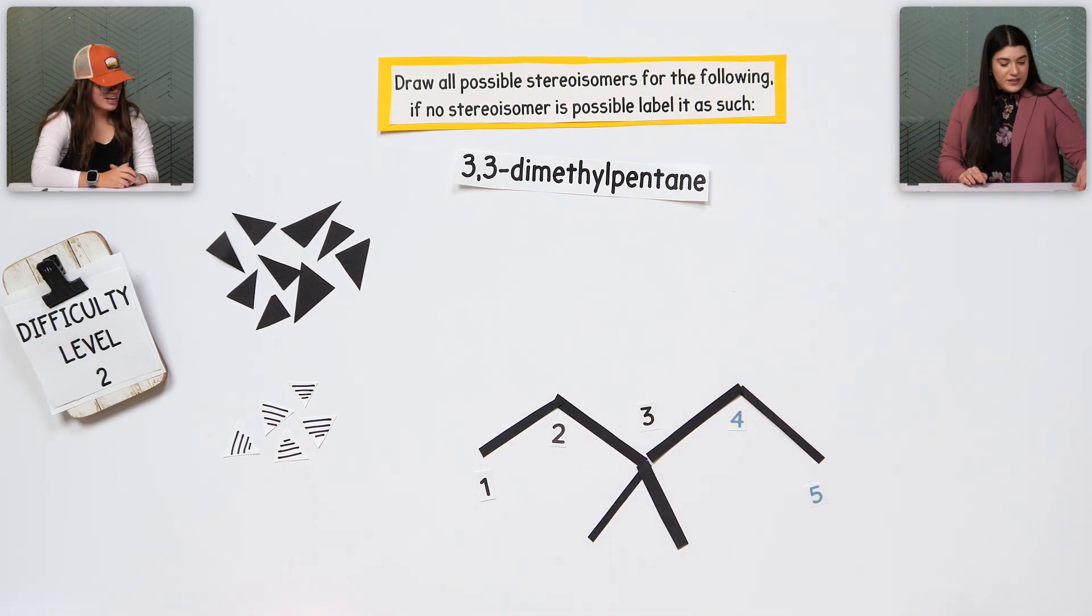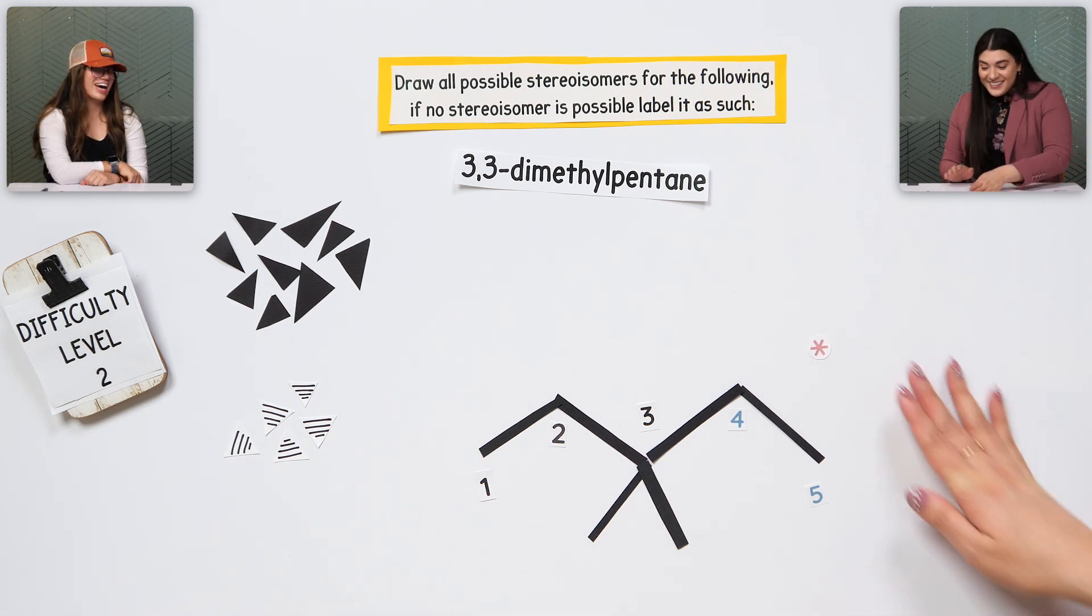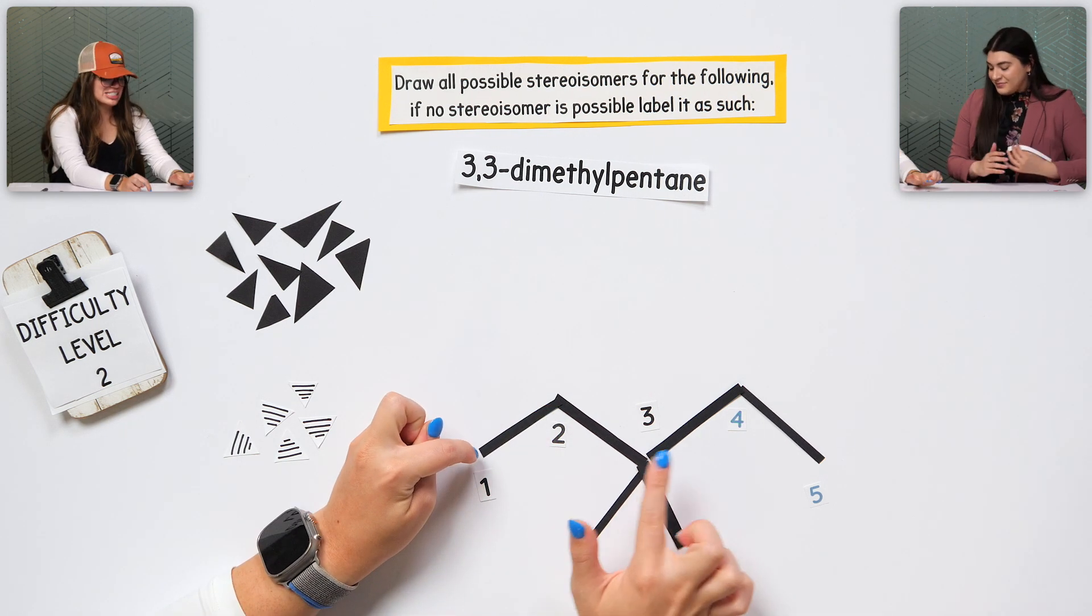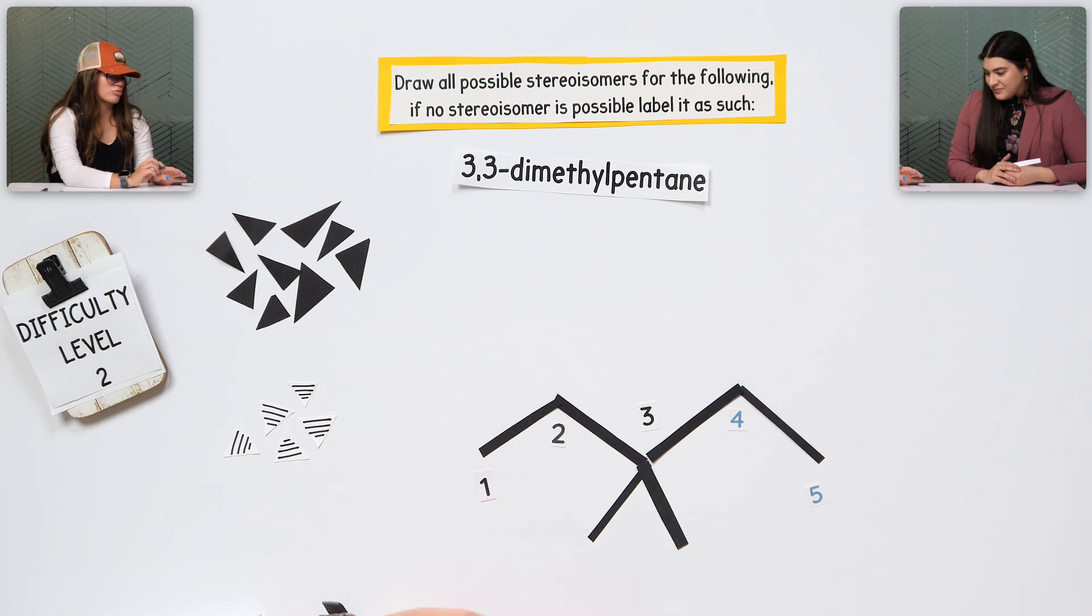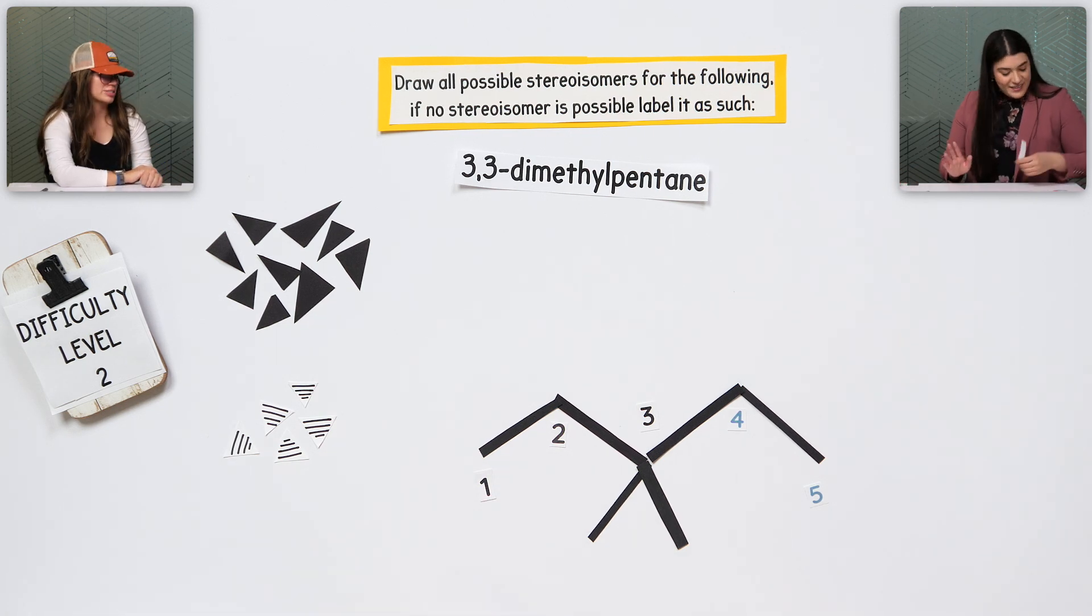So, describe a chiral center. It would have... And point to where that is. Is there none? Good. Okay. Why? So, if I were to pick any of the carbons, I'd only get, like, three different groups, or, like, two, but I wouldn't get four completely different groups. You wouldn't get four. Exactly. That's exactly right.